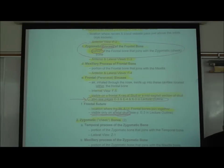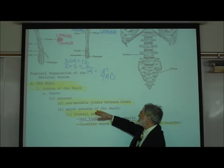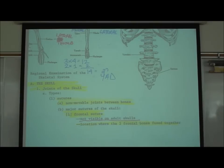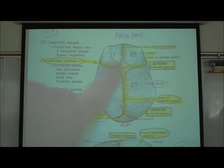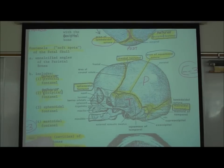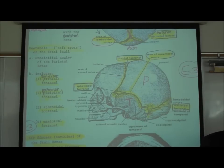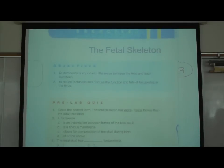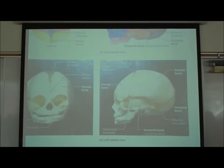Let's look at page E2 in our lecture outline. At the bottom it lists major sutures of the skull. The first is the frontal suture — not visible on an adult skull — it is the location where the two frontal bones fuse together. On page E3, the pictures are of a fetal skull: a superior view and a lateral view. You also have colored pictures in your lab manual in exercise 11, entitled 'the fetal skeleton,' with actual images of the fetal skull.